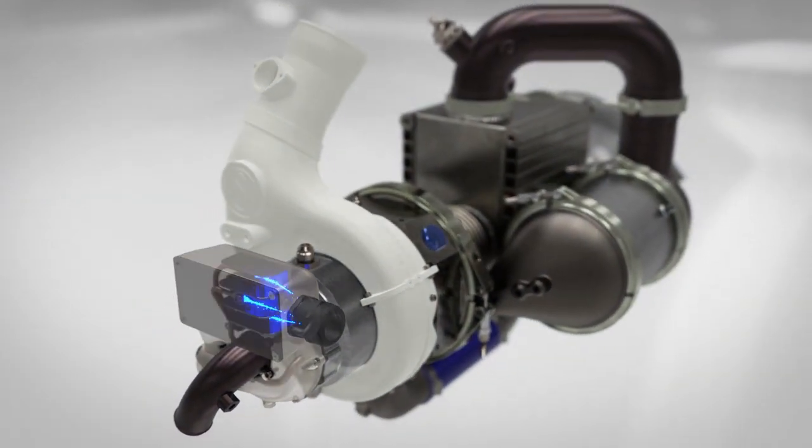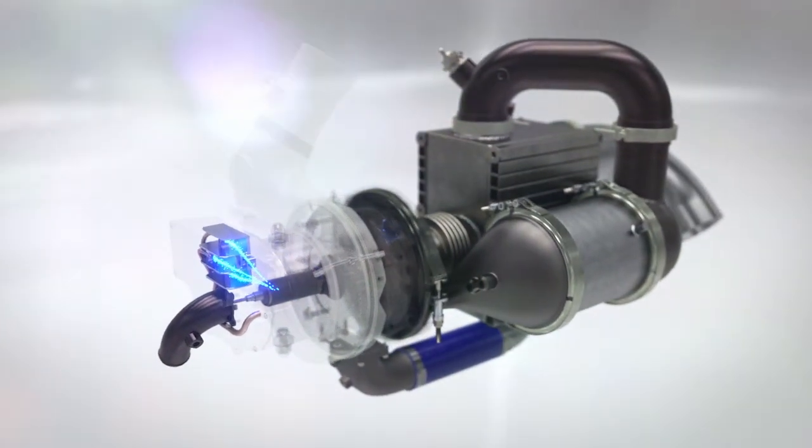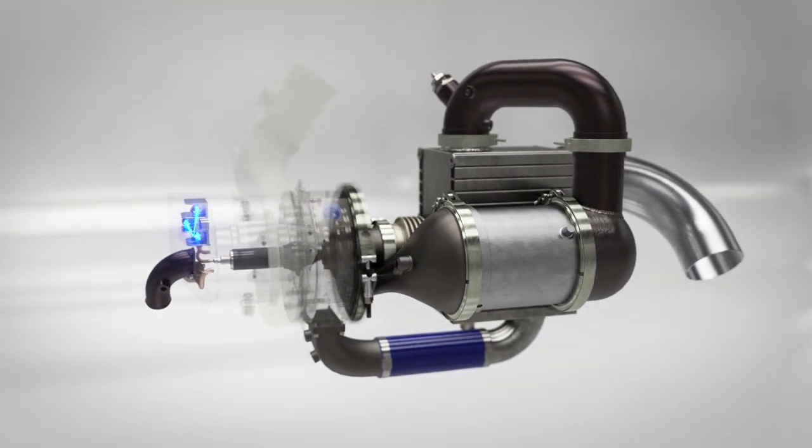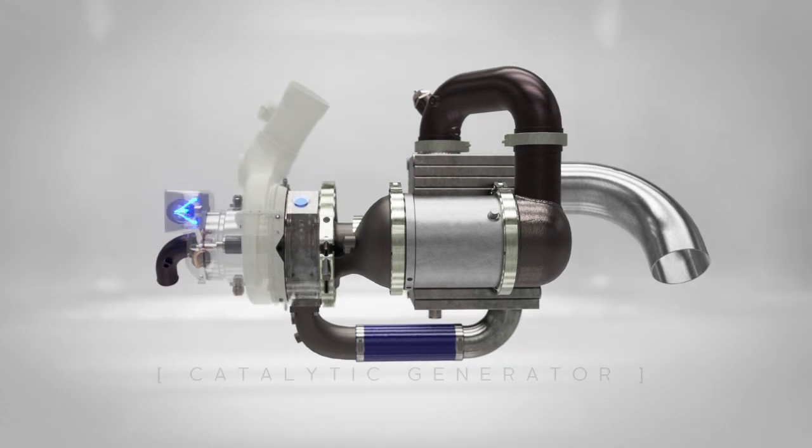The specially developed electric machine attached to the end of the CATGEN produces 35 kilowatts of electrical power, which can be utilised for a range of purposes. Charging batteries in vehicles, providing stationary or mobile power, the applications are almost endless.